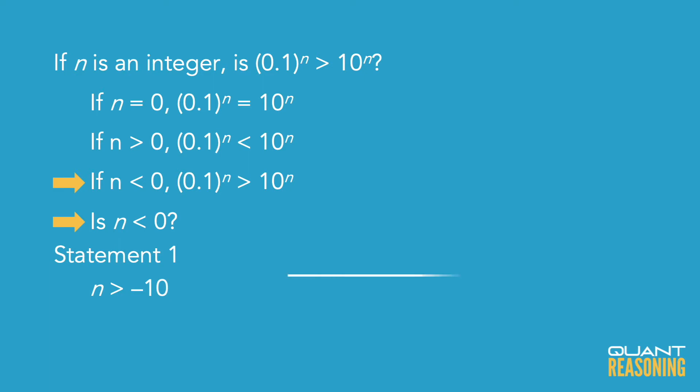Now statement 1 tells us that n is to the right of negative 10 on the number line. So is it negative? Well, it certainly could be negative, but it could go all the way up to positive infinity. So statement 1 doesn't actually tell us whether n is positive or negative or 0.